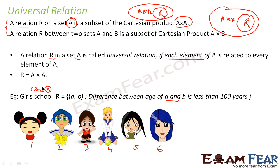Suppose the ages are: girl 1 is 16, girl 2 is 17, girl 3 is 18, girl 4 is 16, girl 5 is 15, and girl 6 is 17. If you take any two girls, the difference in their ages will always be less than 100 years — for example, these two differ by one year, these two by two years, and so on.